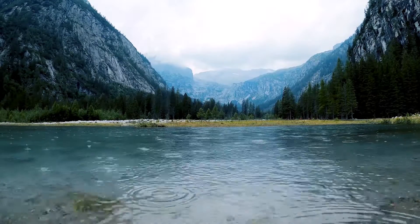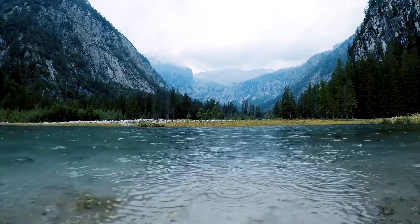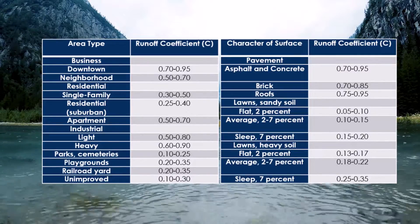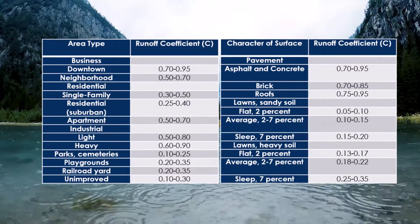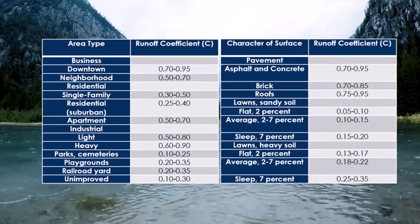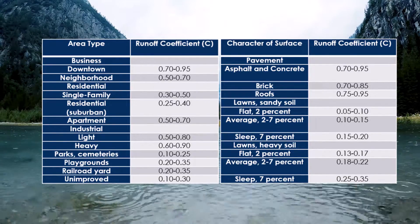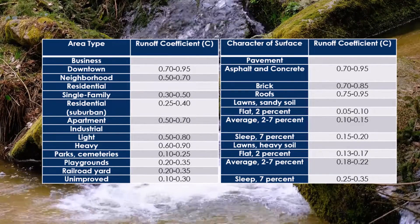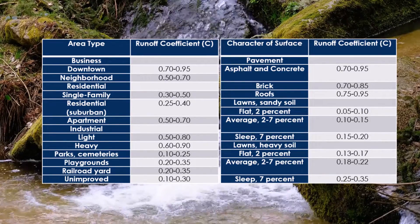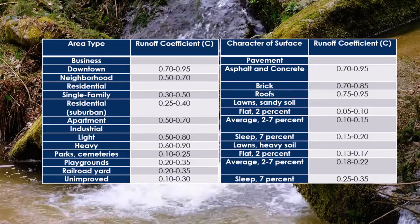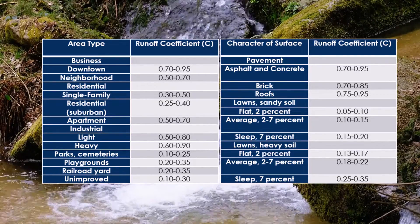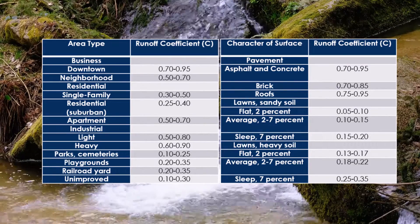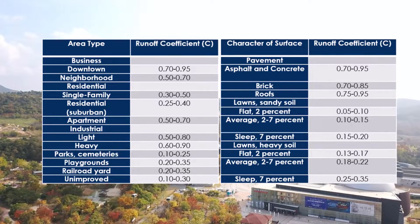For the runoff coefficient C, this represents a ratio of runoff to rainfall. You can see in this table that there are many different area types with different runoff coefficients. An area will have a greater runoff coefficient if there is more impervious surface, such as in a downtown or neighborhood area with lots of impervious surfaces like asphalt. Areas like a flat lawn or forest are going to have a lower runoff coefficient, generating less overall runoff and a much smaller peak flow value coming off the site.